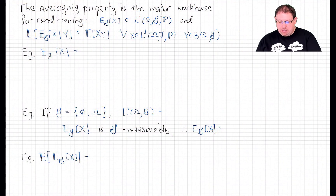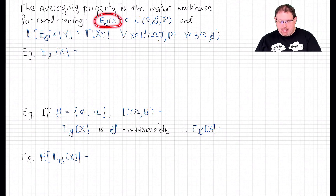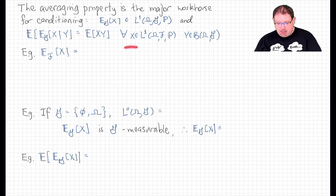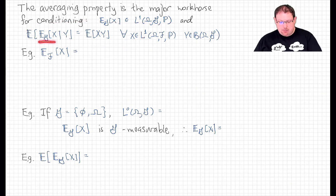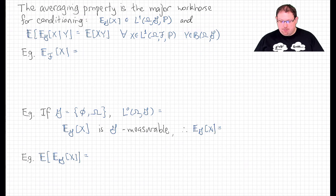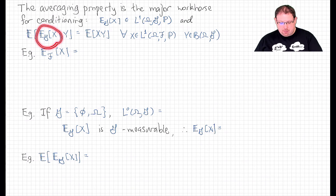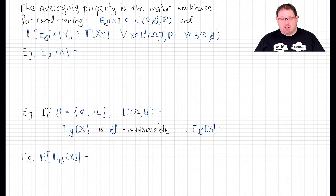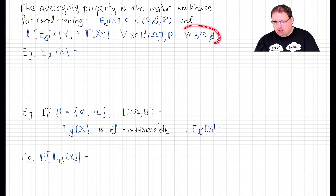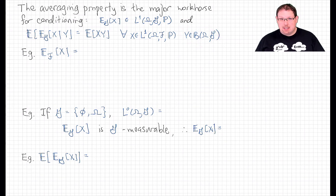The averaging lemma says that we can identify the conditional expectation of a random variable X given a sub-sigma field G as the unique L1 G-measurable function with this property: the expected value of the conditional expectation of X times Y is equal to the expected value of X times Y for every bounded G-measurable random variable Y. This more or less says the same thing as the defining characteristics of the orthogonal projection. If we subtract X from both sides and combine using linearity of expectation, this says that the dot product of E[X|G] minus X with any of these Y's is zero — it's orthogonal to these Y's. That's exactly what defines orthogonal projection, except in that case we have to take all L2 Y's, or any dense subset of L2 will do the trick.